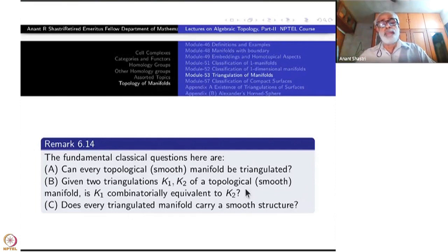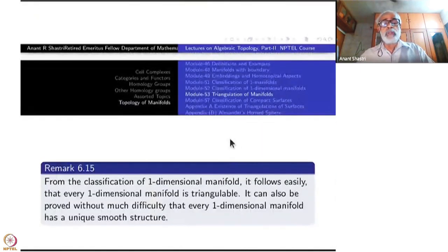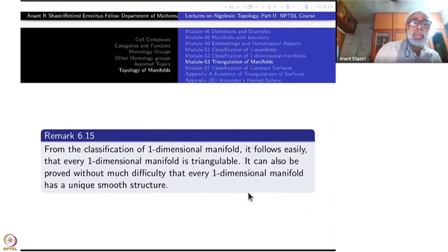Let us see how far in literature we know about these questions. From the classification of one-dimensional manifolds, it easily follows that every one-dimensional manifold is triangulable. Because the connected components are just open interval, closed interval, half closed interval or the circle. These you can triangulate, so everything can be triangulated.